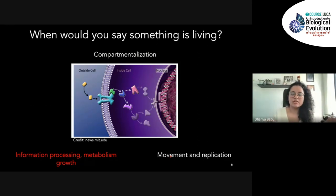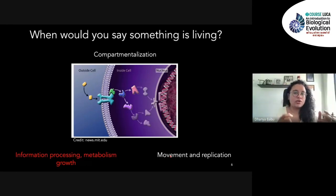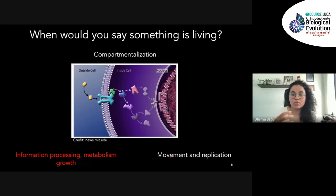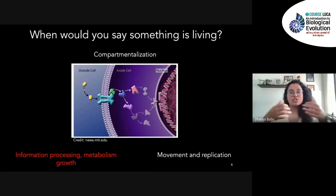If you have a physically separated entity like a cell, it also needs to communicate with its surroundings. In order to do all the biochemical reactions a cell does, it needs to take in nutrients, process those nutrients into chemicals, and build new components internally. Communication between the external and internal environment is important to do all the reactions that maintain cells and help them grow.